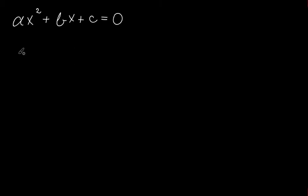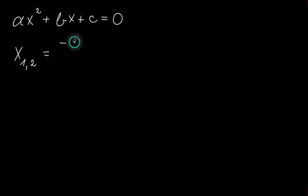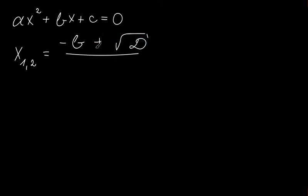The solution of a quadratic equation looks like this: x is equal to negative b plus the square root of the discriminant, divided by 2 times a. a, b and c are real numbers.